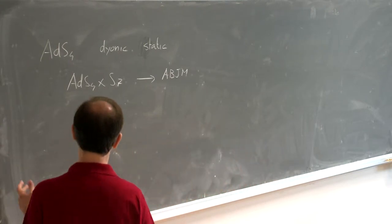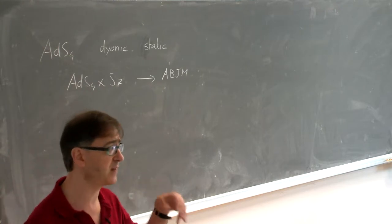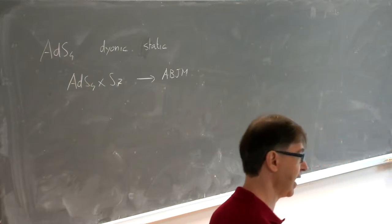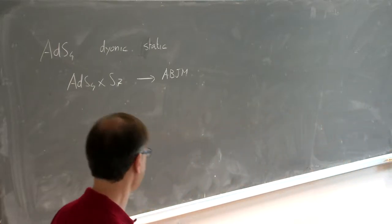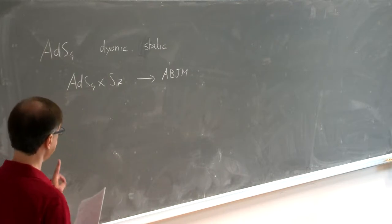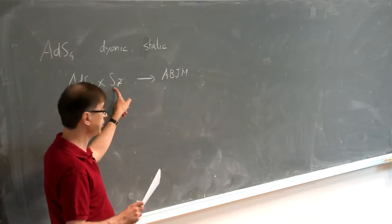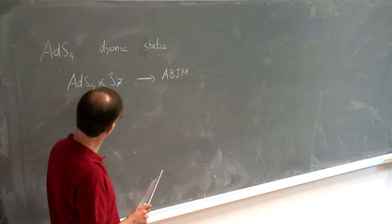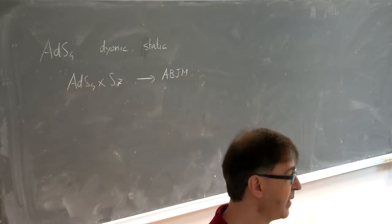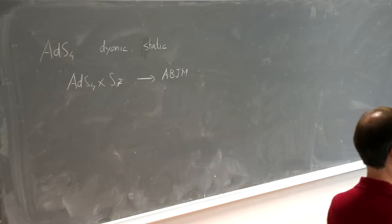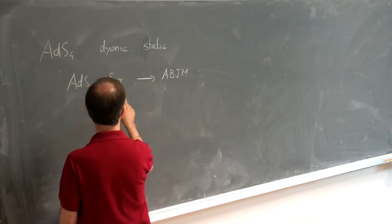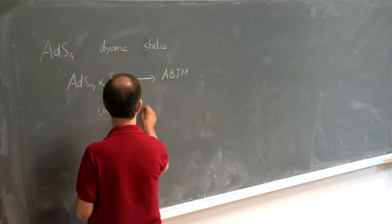Luckily enough, there is such a dimensional reduction in the form of a consistent truncation, which means that solutions of the equation of motion found in 4D can be uplifted to 10D. There is a consistent truncation that contains precisely the fields I'm interested in. The black hole is static so there is no rotation, but it is electrically charged, so from the point of view of 11-dimensional theory it is spinning inside S-7. The electric charges will be charges under the Cartan of the isometry group of S-7, which is SO(8).